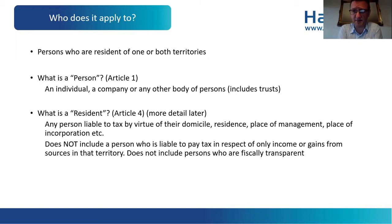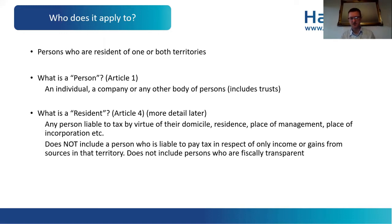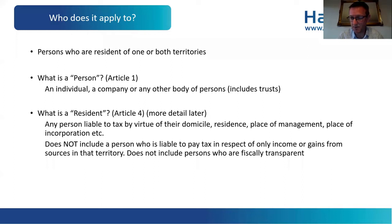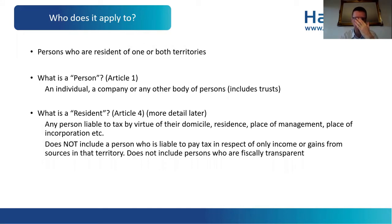What does 'resident' mean? This is contained in Article 4. It covers any person liable to tax by virtue of their domicile, residence, place of management, place of incorporation, or similar in a jurisdiction. If you are obliged to pay tax in Gibraltar because you are ordinarily resident there, you are a resident for treaty purposes. However, the treaty test is not the same as the domestic test — you need to consider whether you are resident for the treaty, not simply ask whether you are tax resident under the Income Tax Act, as Article 4 contains more language.